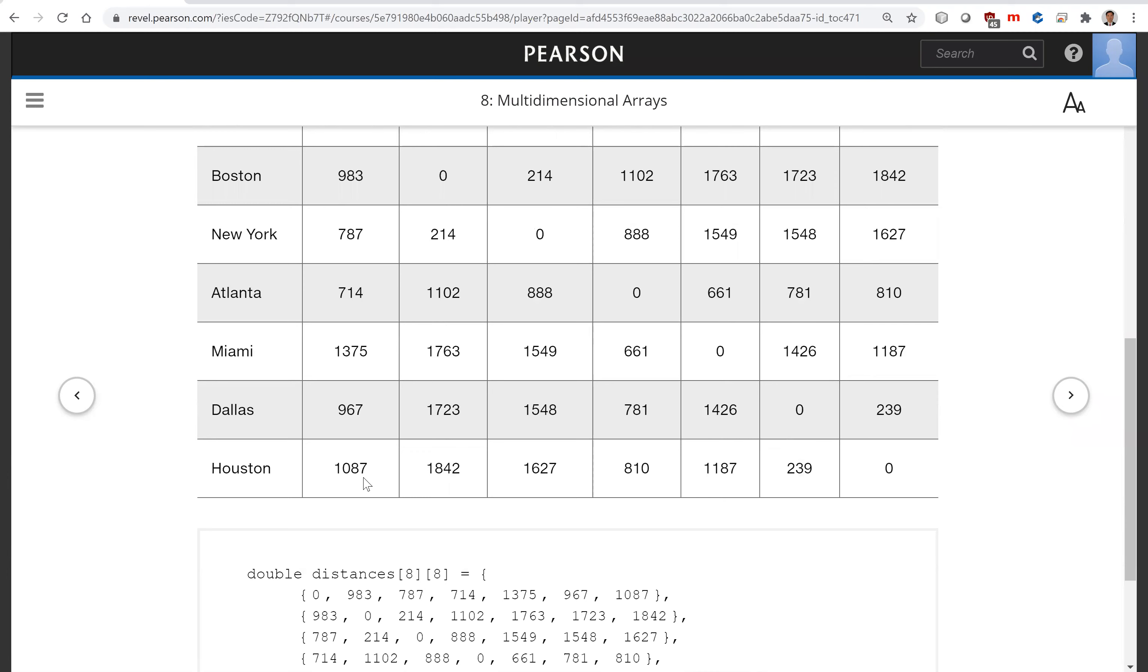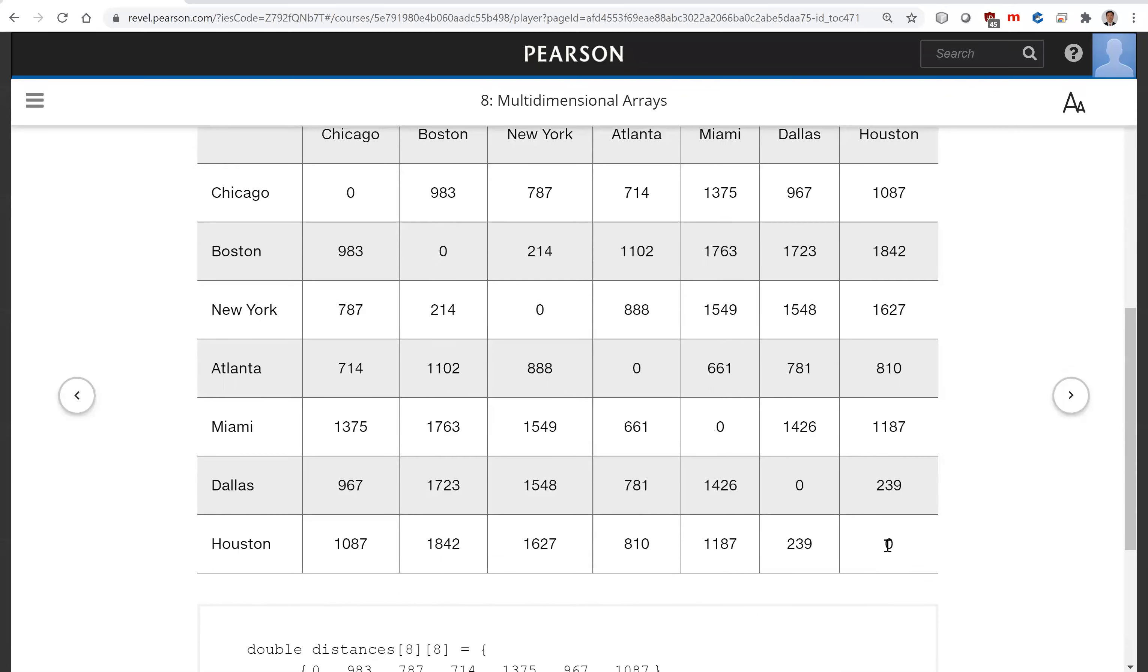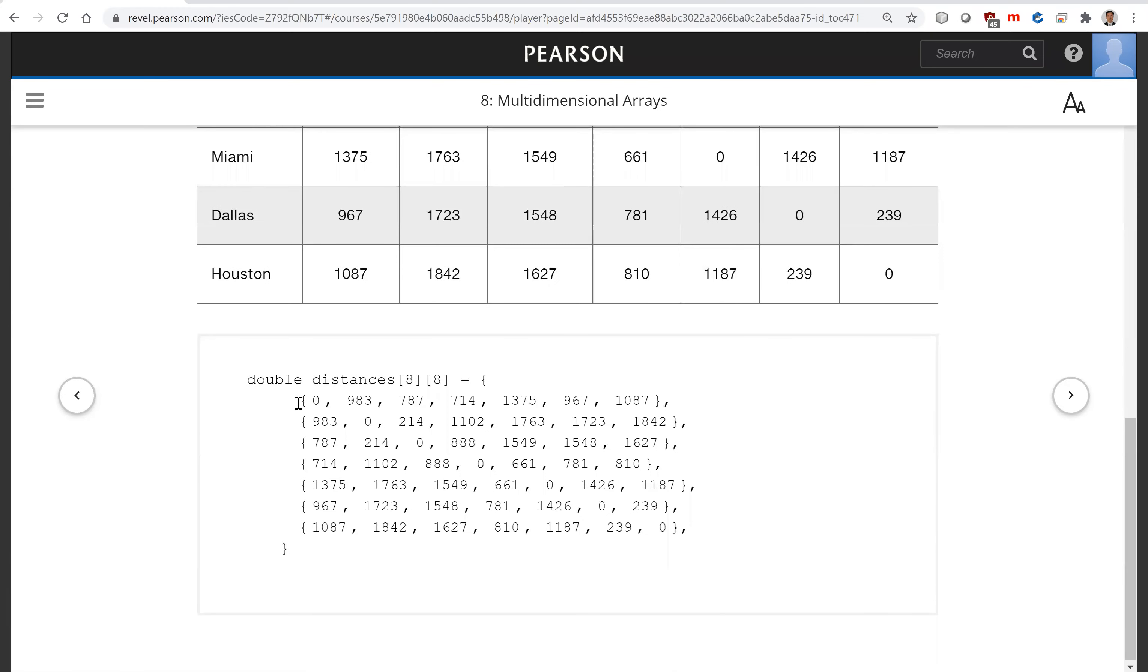Houston to Chicago, Houston to Dallas, and Houston to itself is zero. We can represent all this data in a two-dimensional array.